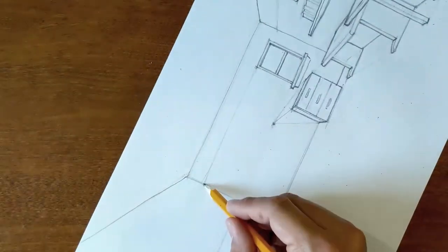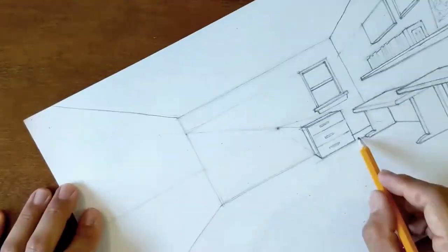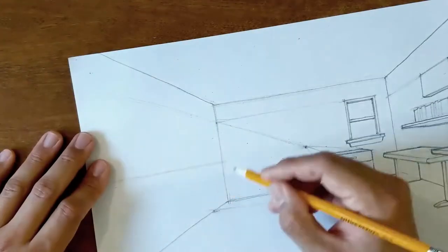Now over here I'm using the top line of the window to map out the top line of the door on the left side wall, and those have the same height.